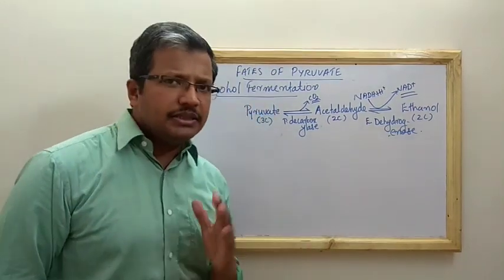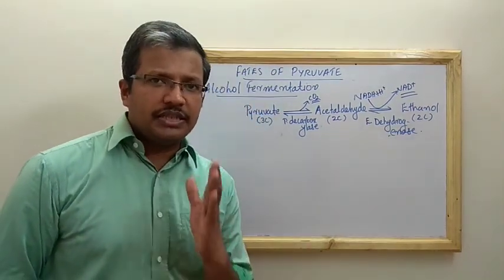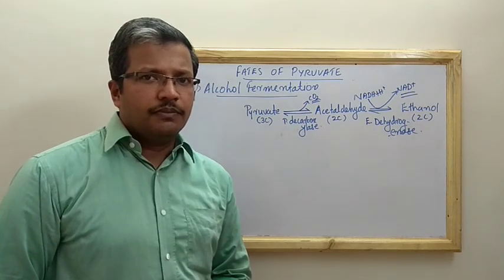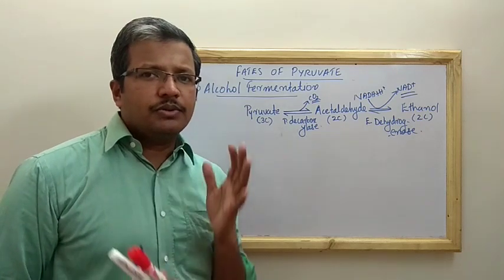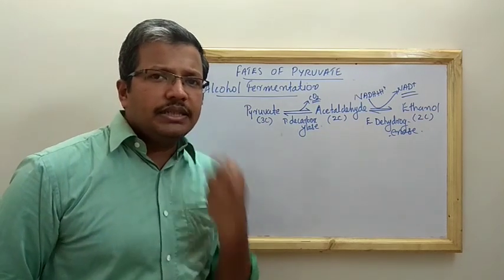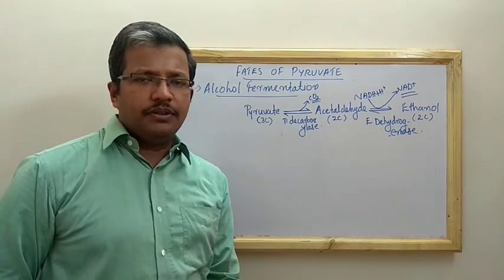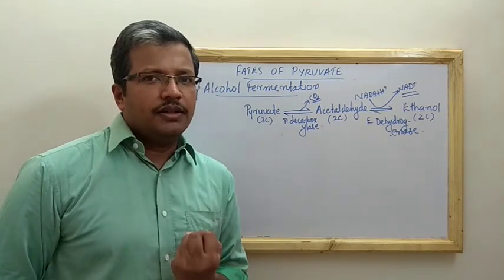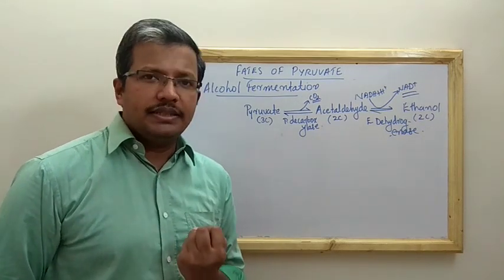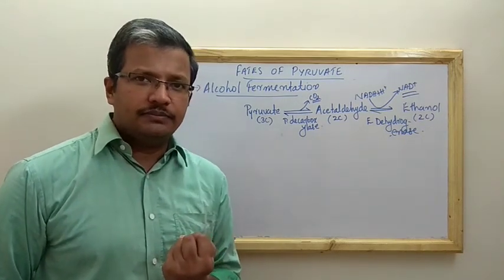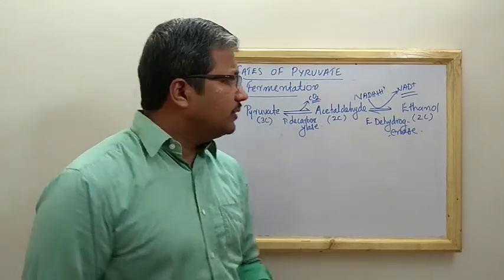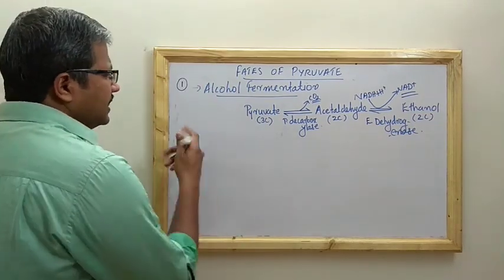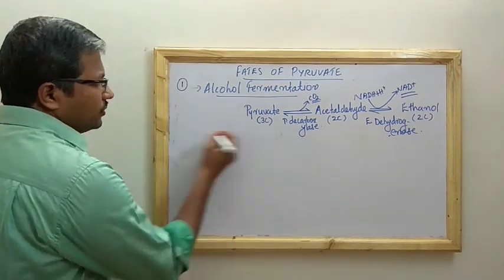The same is the case for lactic acid fermentation that happens in your muscle — it is actually just releasing the NAD⁺ which is required for the sixth step of glycolysis. Let us now see lactic acid fermentation, which is the second anaerobic fate.